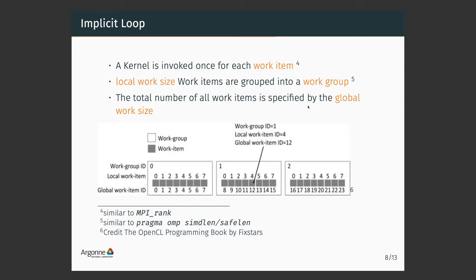The work group size is what they call the local work size, and the total number of iterations you want to do is the global work size. For example, if my loop has 24 iterations, and I bundle them in chunks of 8 elements, I have a local work size of 8 and a global work size of 24.